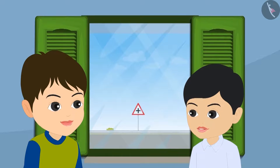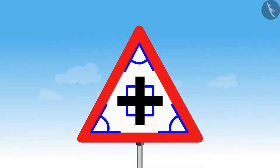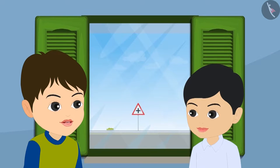Dholu observes that the traffic sign has four angles — one, two, three, and four — all similar to a right angle. Bholu spots three more angles in the sign: one, two, and three. These three additional angles are less than right angles. Children are asked if they can find even more angles in the sign.